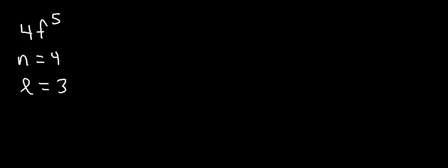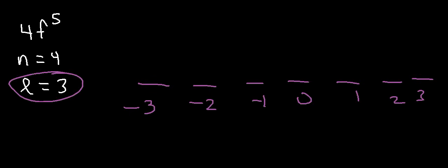And the f sub-level has 7 orbitals, which based on this number, it varies between negative 3 and 3. Now, we'll focus on the 5th electron. So 1, 2, 3, 4, 5. The 5th electron landed in the orbital that has a value of 1. And because the arrow is an up arrow, the spin is positive 1 half. And that's what you need to do to find the 4 quantum numbers of any electron within an element.